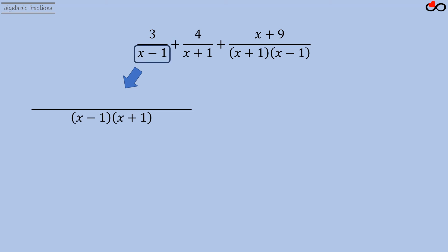We divide the least common multiple by the denominator of the first fraction, (x minus 1), and multiply by the numerator 3. We get 3 times (x plus 1), which we add to the numerator of the common fraction.